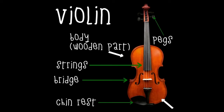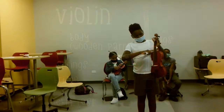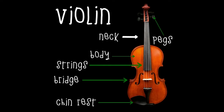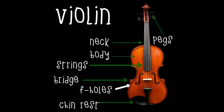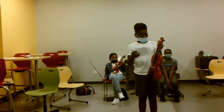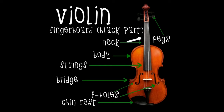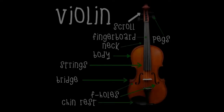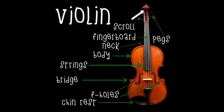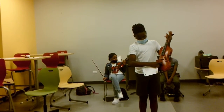Then you have your neck — this part, or you could also say this long part — which also helps when playing different notes. Then you have your f-holes here, which help the vibrations of the strings create the sound. Then your fingerboard, the black part. Then you have the scroll here. And then you have your tailpiece here, which holds your strings.